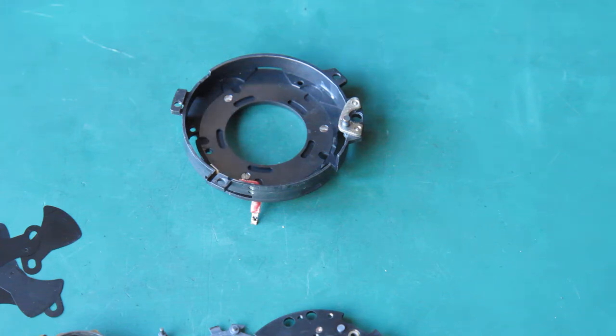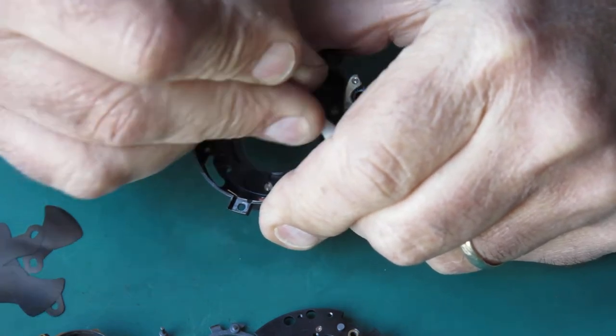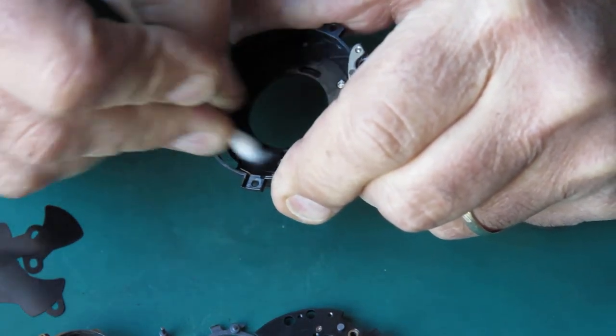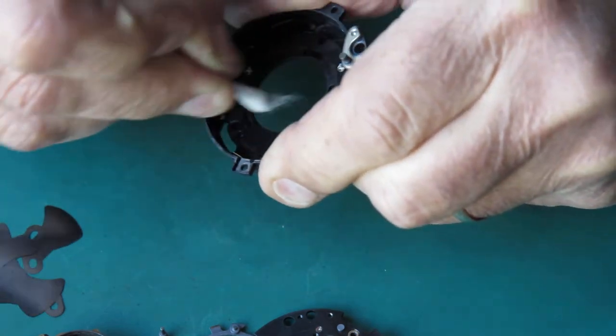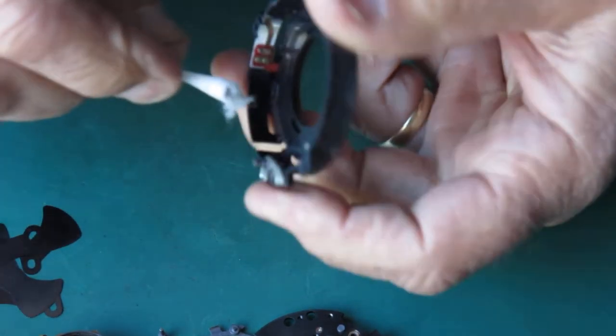I'll clean all these shutter components with naphtha cigarette lighter fluid. This shutter is quite clean as shutters go, so there's not an awful lot to do here.